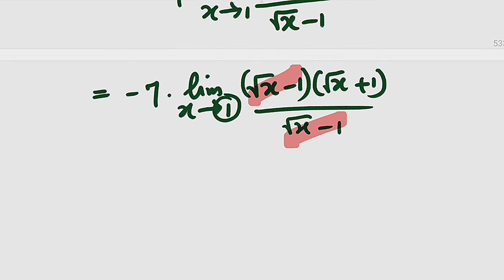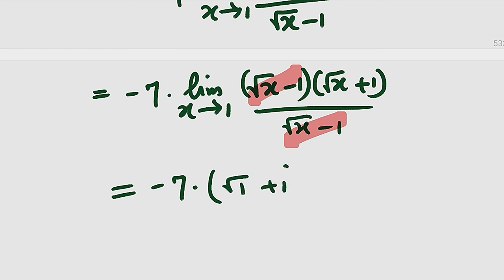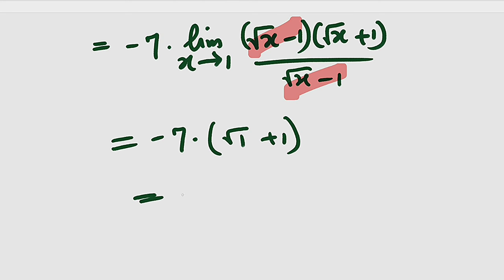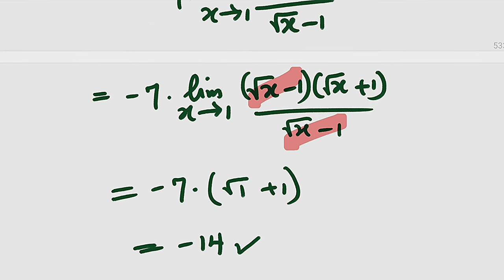Since x is approaching 1, we can directly plug in 1. This is equal to negative 7 multiplied by the square root of 1 plus 1. We know that the square root of 1 is 1, and 1 plus 1 is 2. So 2 multiplied by negative 7 gives us negative 14. And hence, negative 14 is the solution to the first problem.